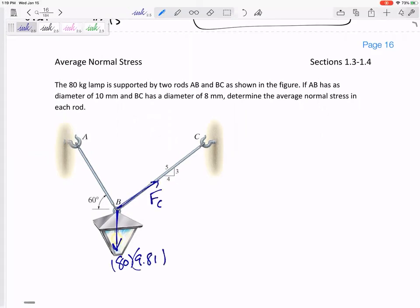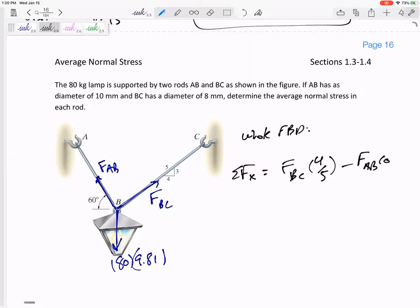I've got the force in BC, and I've got the force in AB. So kind of looking at this whole free-body diagram. Sum of the forces in the X: FBC, the 4 fifths component, FAB, the cosine 60, set those equal to zero.